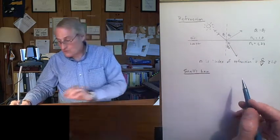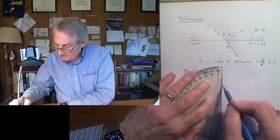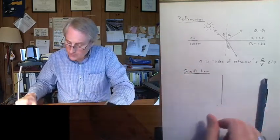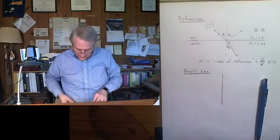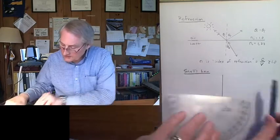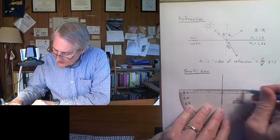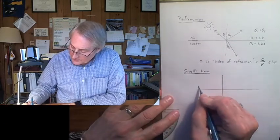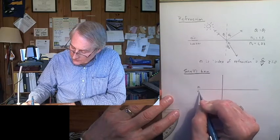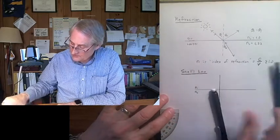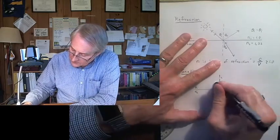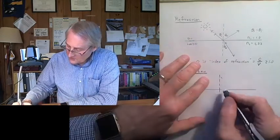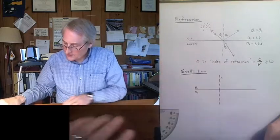And let me just redraw this to, oh, I wanted, I'm sorry, I wanted a dashed line for the normal. Let me fix that here. Okay, here's our surface again. And this will just be material 1 with index n1, and this will be material 2 with index n2. And this was just to be the normal. So dashed lines, this is, right, that's perpendicular.